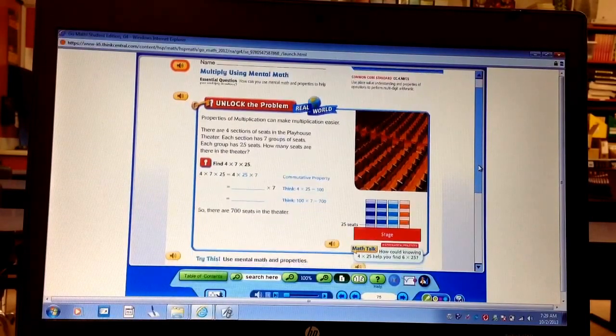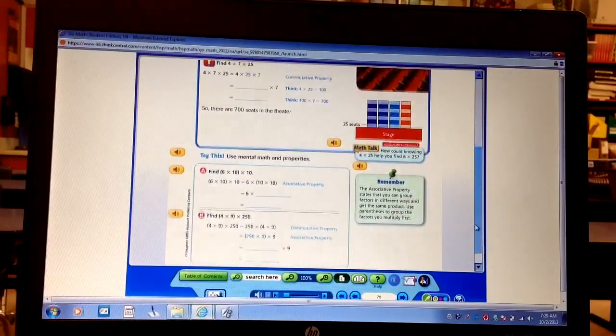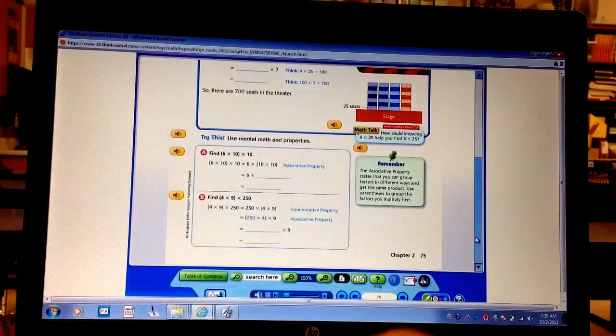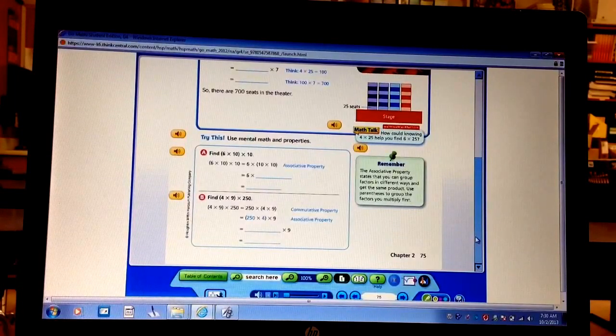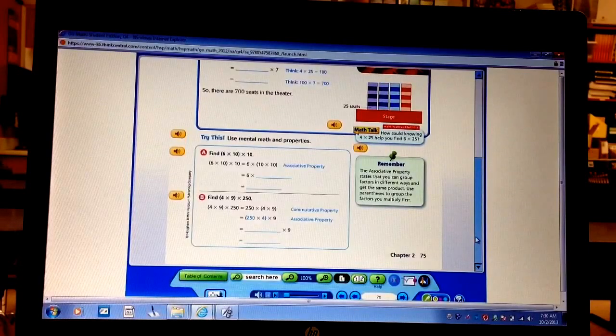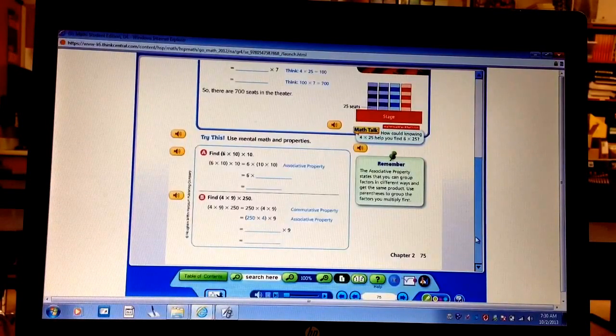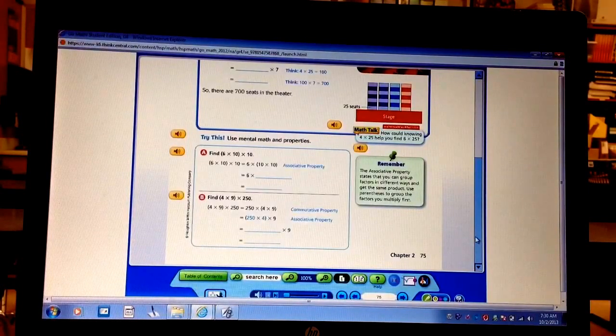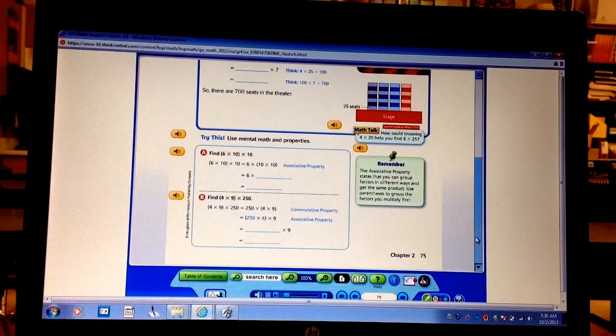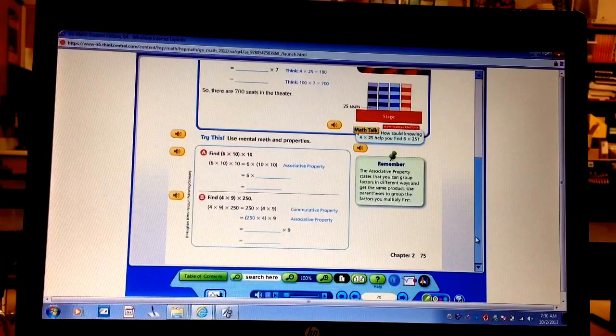Now, the math talk says, how can knowing 4 times 25 help you find 6 times 25? Well, if you're already counting by 25s and you know 4 times 25, well that's just, you know, 6 is 2 more than 4. So you just go up 2 more. Well, obviously we started learning that 25 plus 25 is 50, or 25 times 4 is 100. So every 2 25s is 50. So you could go, well, okay, count by 2s. Well, 50, 100, 150. That's the best way it could help you.